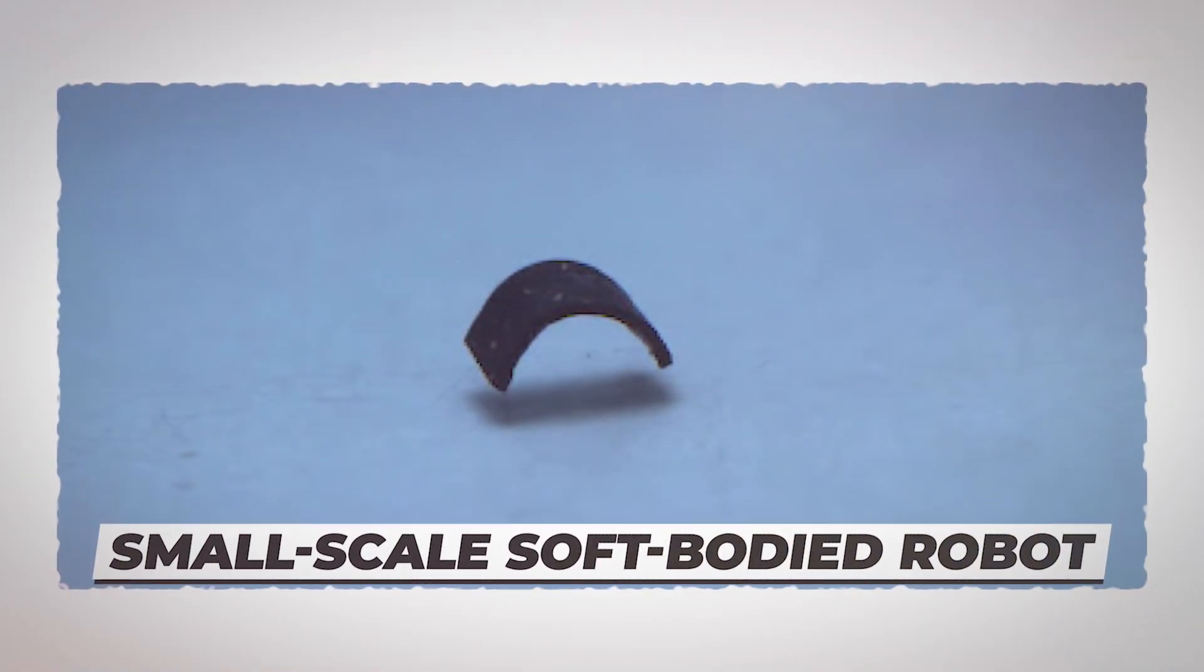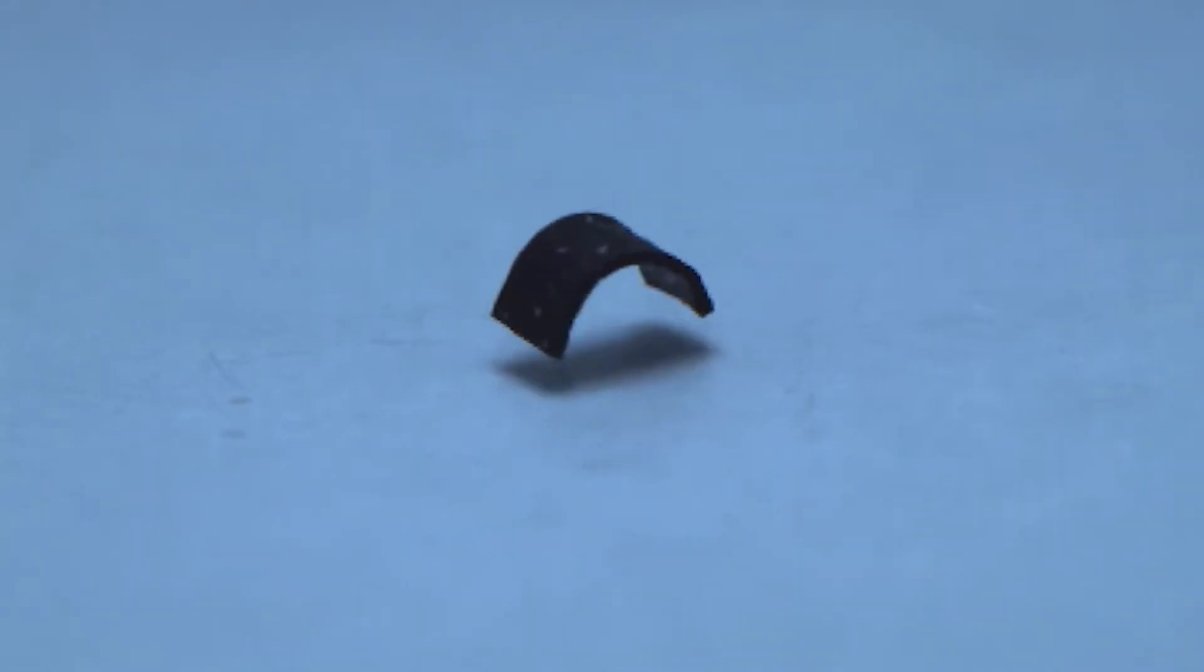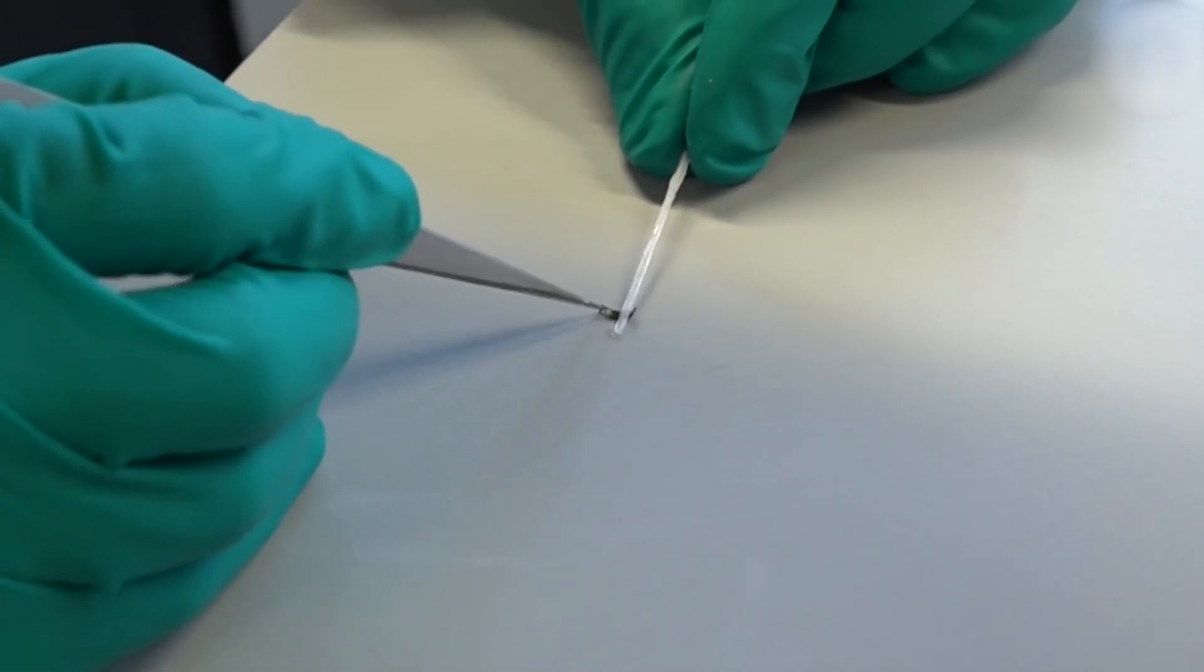Number 4. Small-Scale Soft-Bodied Robot. This robot is softer than the previous ones. Designed and created at the Max Planck Institute in Germany, this one is even capable of carrying objects. However, specifically designed to access confined and enclosed spaces, it helps in bioengineering and healthcare sciences.